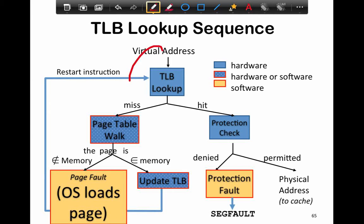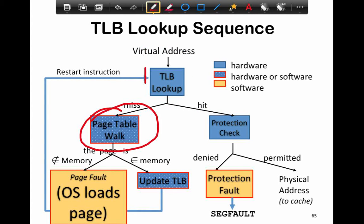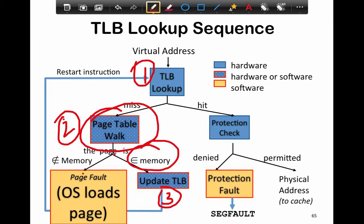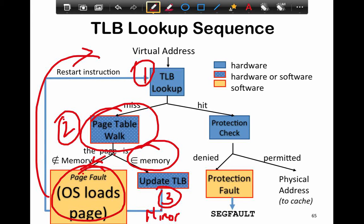The TLB lookup sequence proceeds as follows: first you do the TLB lookup, which results in either a hit or a miss. If it's a miss, you look up the translation and do the page table walk. At that point, the page can either be in memory - in which case you reload the TLB and you're good to go, known as a minor page fault in OS terminology - or a major page fault, where the page is not even in memory, it's been swapped out to disk, and you have to load the page from disk.